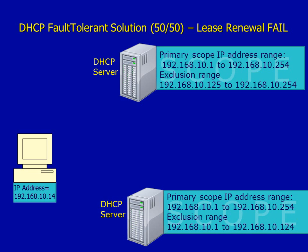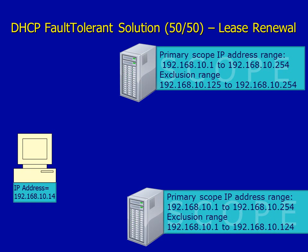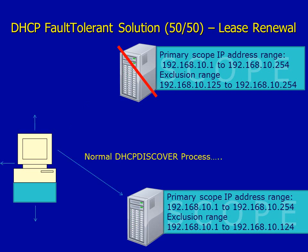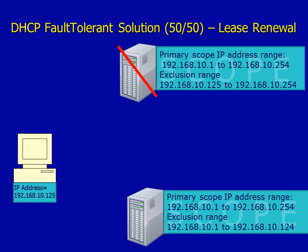Similarly, the bottom server has a scope of 10.1 to 10.254, but with an exclusion range from 10.1 to 10.124, so it provides addresses from 10.125 to 10.254. When the client sends a DHCP Request and the top server is up, it sends back a DHCP ACK and everything works fine. However, if the top server is taken down for maintenance, it gets no reply. The client goes through the DHCP discovery process, finds the bottom server, and is assigned the first available address from that scope — in this case, 10.125.